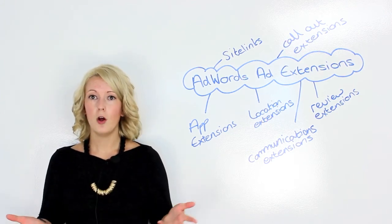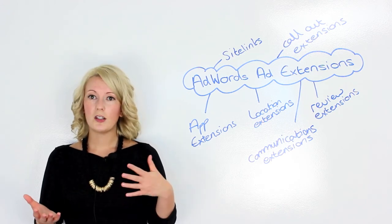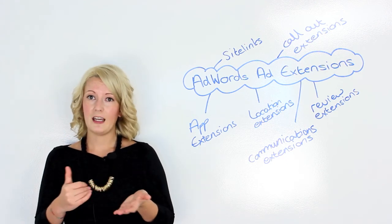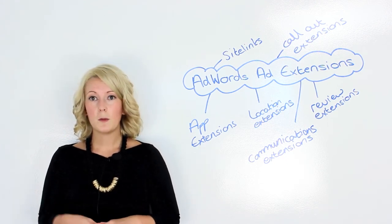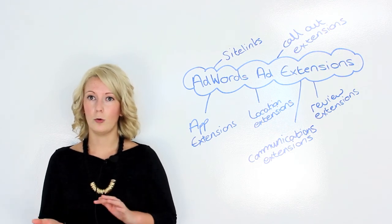So say you had a campaign for all of Europe or for France, for example, and then you could have ad extensions, site links for different locations within France, and you can put them at campaign level or ad group level, depending on how specific your targeting is.